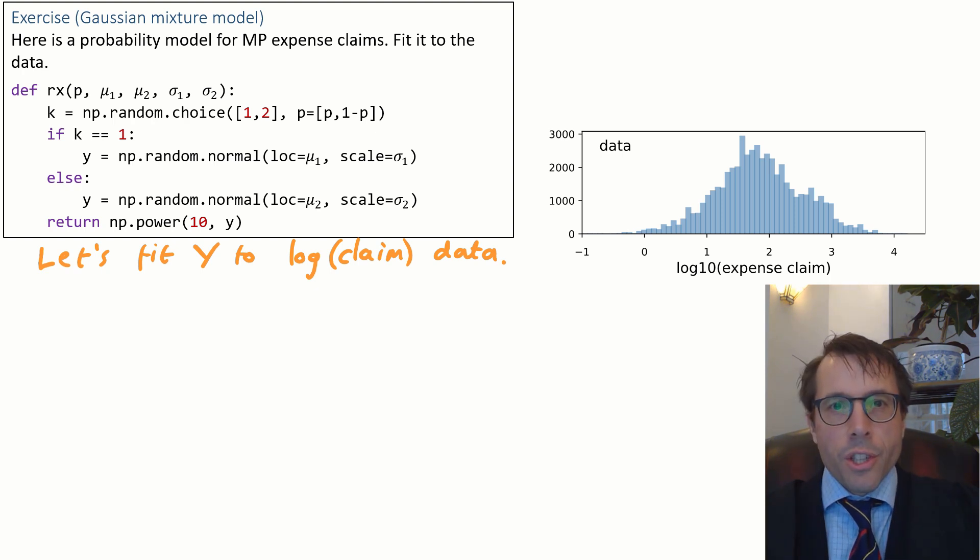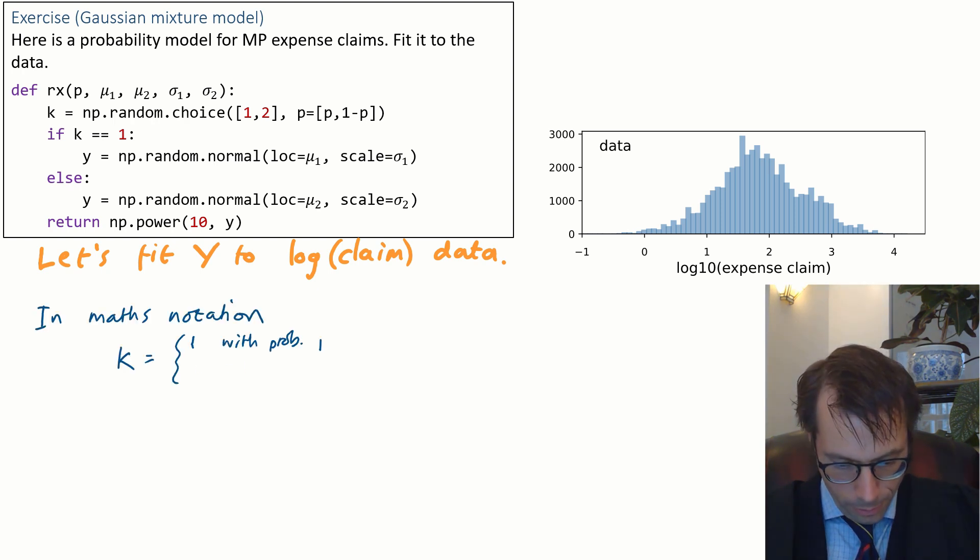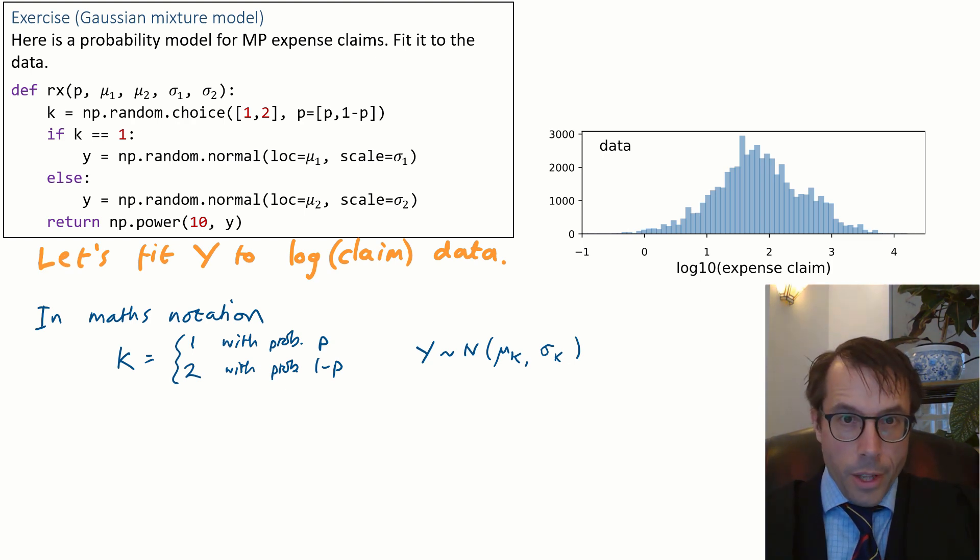OK, now, to fit a generative model using maximum likelihood, we need to write out the likelihood. We saw what to do in the last video. First, we write out the probability model using random variable notation. We covered this in section 1.3. I'll write this particular piece of code in the following way. First, I'll generate a random variable k. k will be 1 with probability p, 2 with probability 1 minus p. And then I'll let y be distributed as a normal random variable with parameters mu k and sigma k.